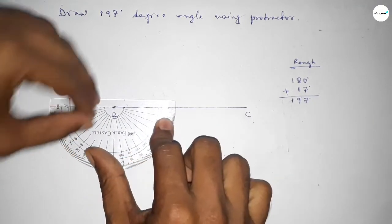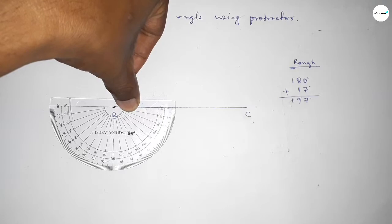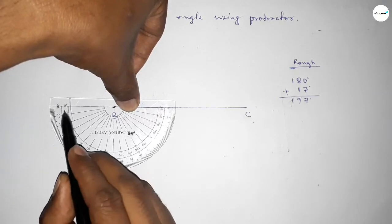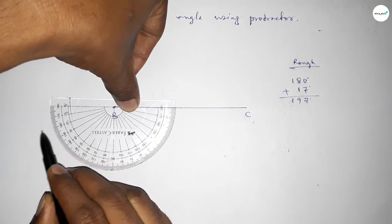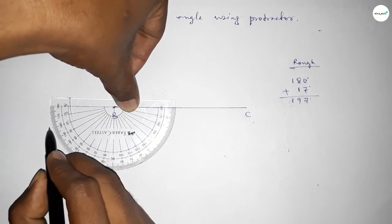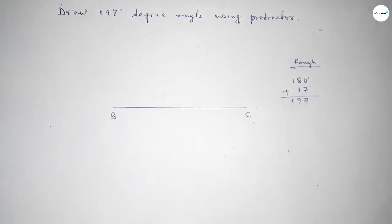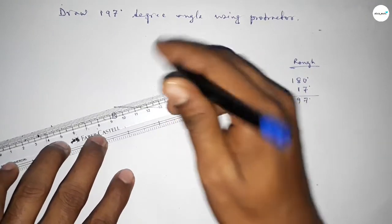So 0, 10, 15, 16, 17. So by adding extra 17 degree angle with 180 degree, then we can get 197 degree. Now joining this side to get 197 degree and taking here a point. So angle ABC up to this 197 degree.